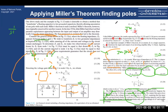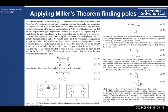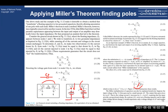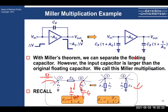Miller's theorem was covered in the quiz, so I'll skip the details. In summary: usually there is a C_μ cap in the high-frequency small-signal transistor model. Miller's theorem splits it into two isolated nodes. At the first node (input), C_μ gets multiplied by (1 + |A|), becoming C_μ·A since the gain is large. At the second node (output), C_μ is multiplied by (1 + 1/A), which approaches just C_μ when gain is large.